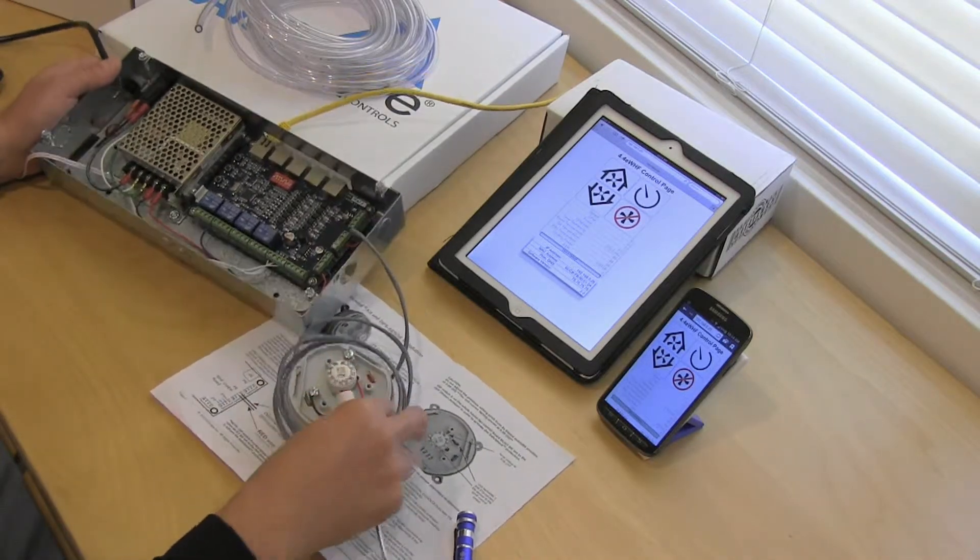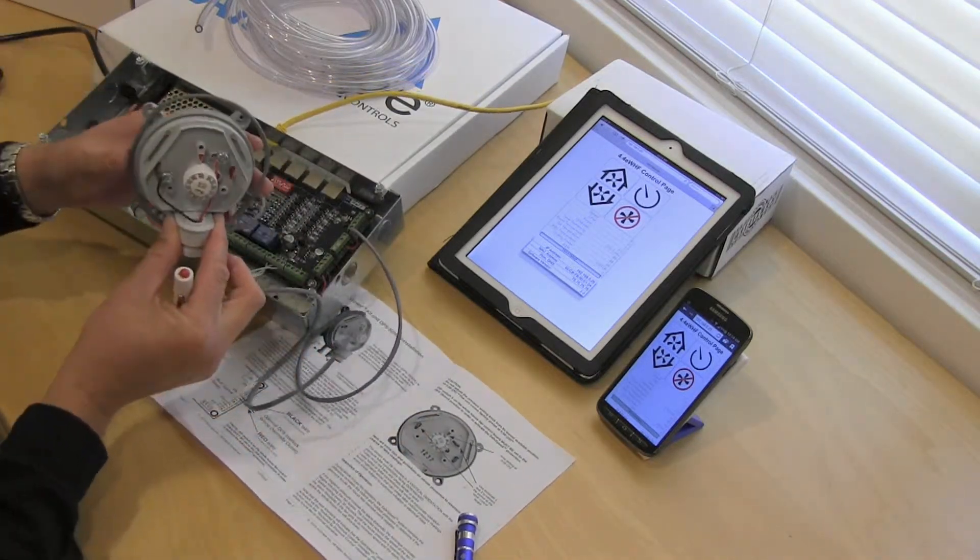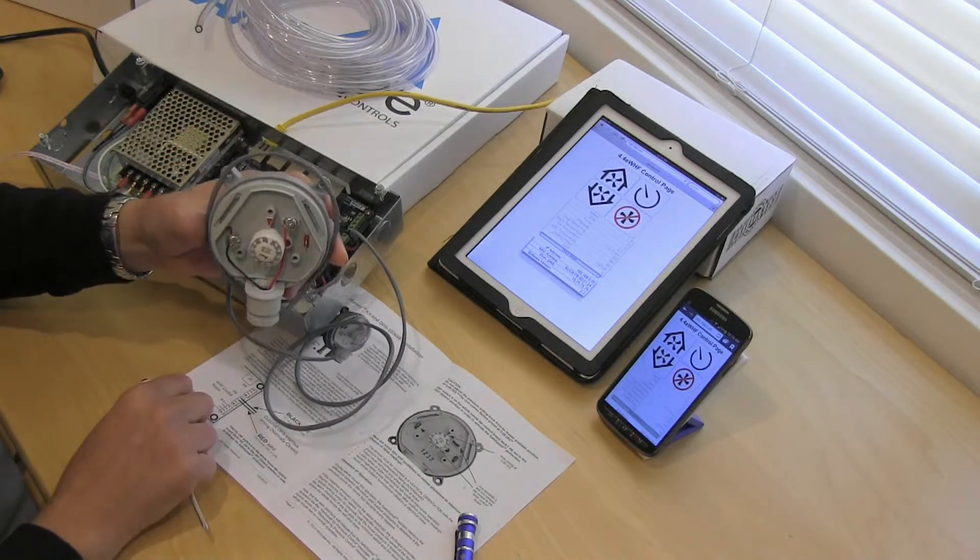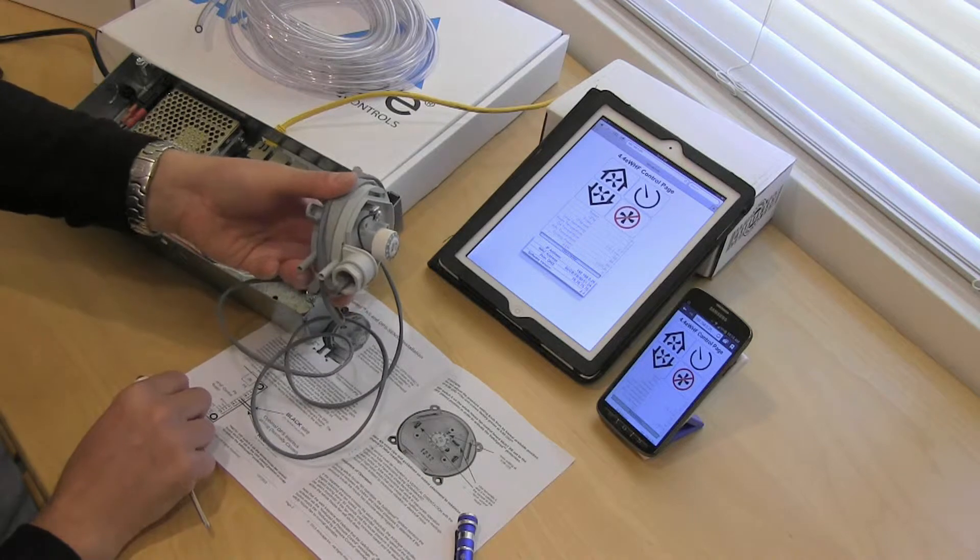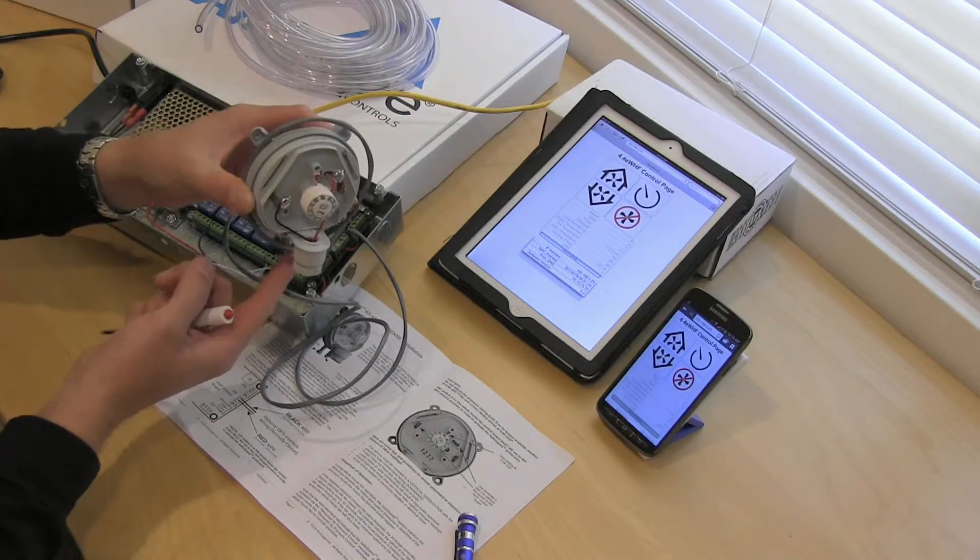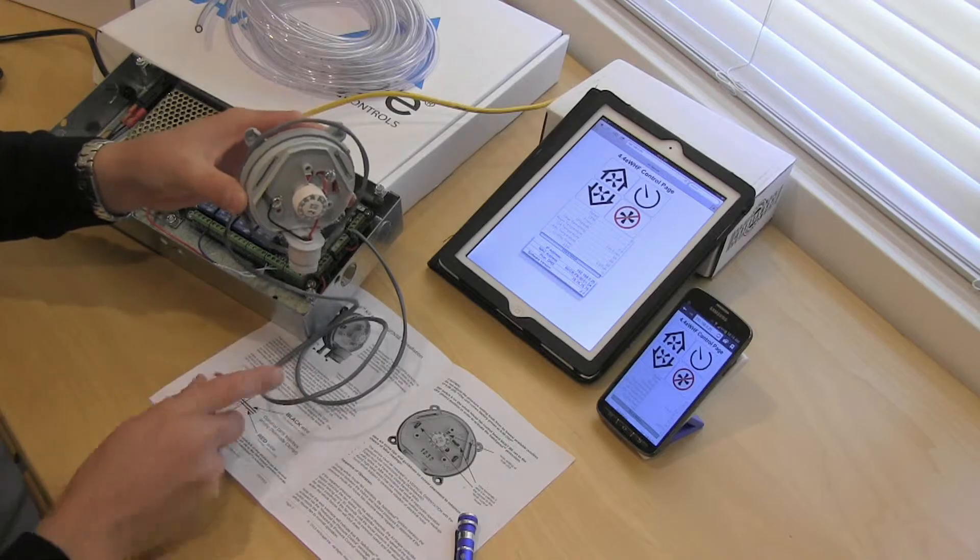Now let's talk about how to mount the sensor. You want to make sure it's mounted in a vertical orientation just like this. So it cannot be lying down, it can't be flipped sideways, it's got to be perfectly vertical with the ports, the connection ports facing downwards.